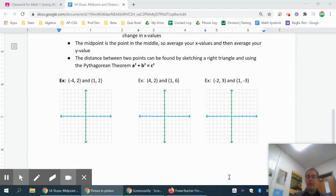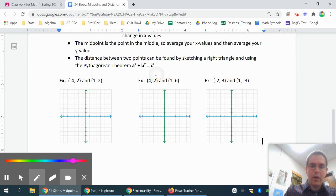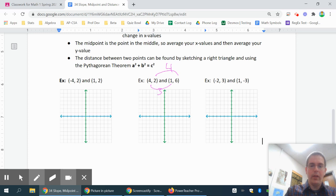Okay, this next one I'm looking for slope, midpoint, and distance. So I'm looking for the distance from two to six, which is four, and the distance from four to one is three. So if I go from two to six, that's four, and from four to one, that's three.